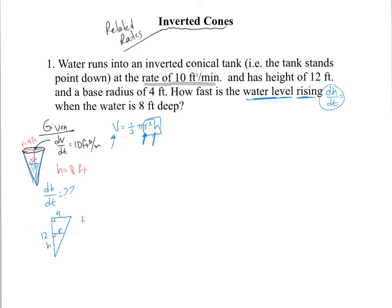Since we want to solve for dh/dt, we want to get rid of r and express everything in terms of h. We set up the ratio: 4 to 12 equals r to h. We solve for r because we want to substitute it into the volume formula to eliminate r, leaving everything in terms of h. If instead you needed dr/dt, you'd solve for h and eliminate it.